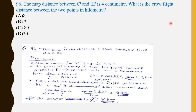Okay students, item number 96 up to hundreds are based on the map provided on the next page. These items should be attended by sighted or non-visually impaired candidates only. Let us see now about question number 96.